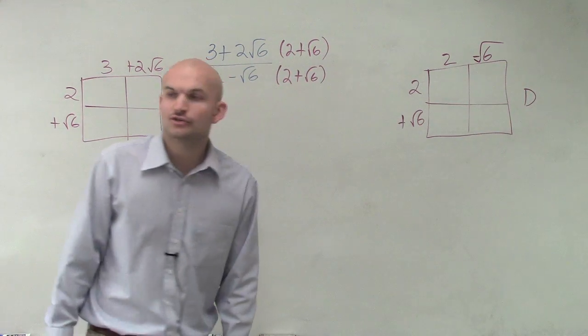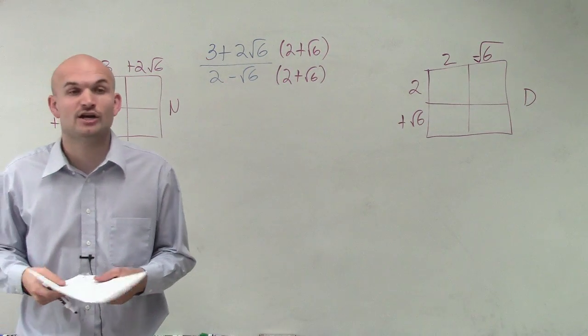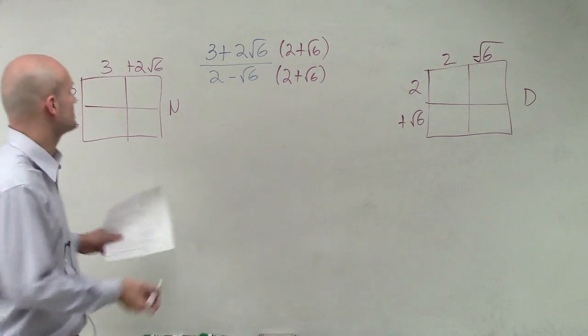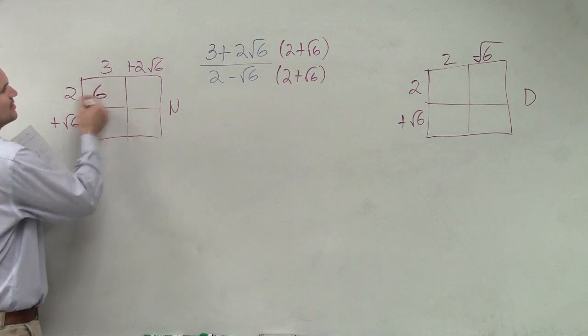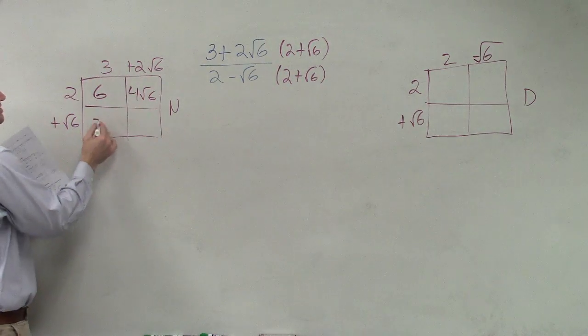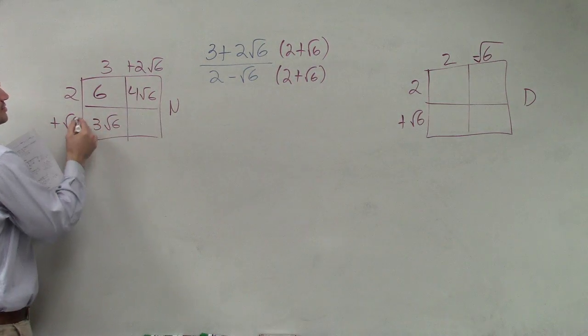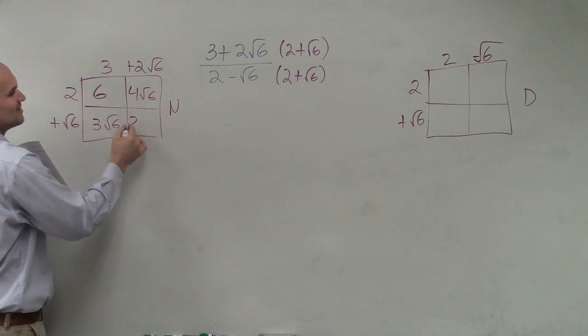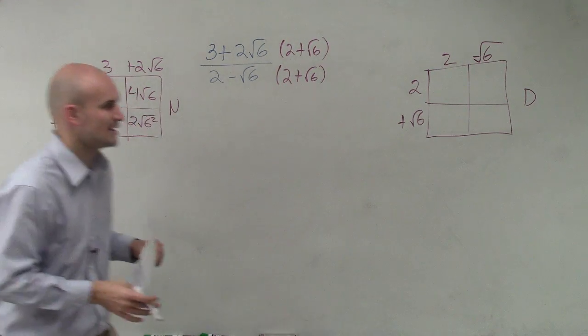To use the box method, you just find the area of each box - length times width. 3 times 2 is 6. 2 times 2 square root of 6 is 4 square root of 6. 3 times square root of 6 is 3 radical 6. Square root of 6 times 2 times square root of 6 is 2 square root of 6 squared, and we'll simplify that in a second.